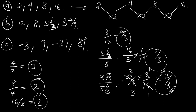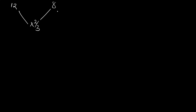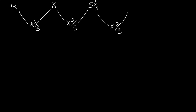That means with this common feature, if you multiply this term by 2/3 it will give us 8. If you also multiply this term by the common feature 2/3 it will give us 5 and 1/3. If you multiply 5 and 1/3 by the common feature 2/3, it will give us 3 and 5/9.